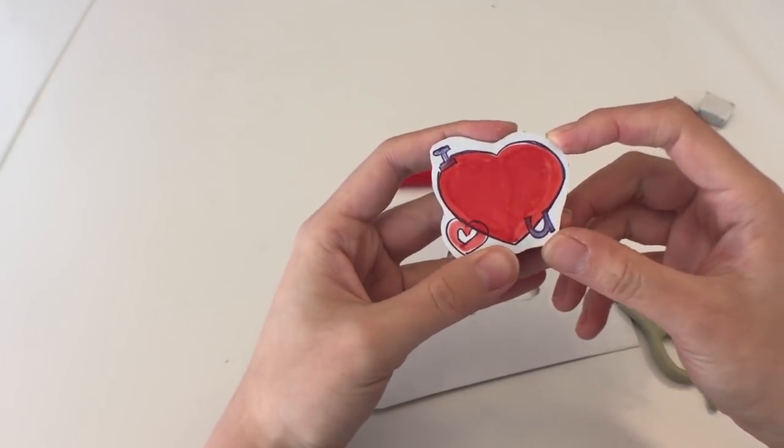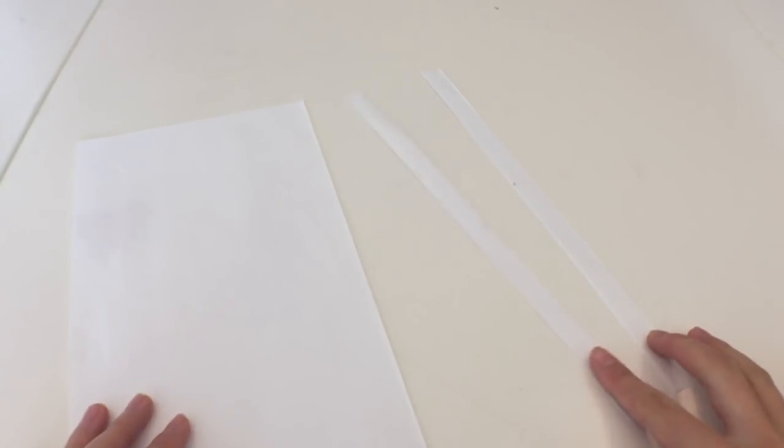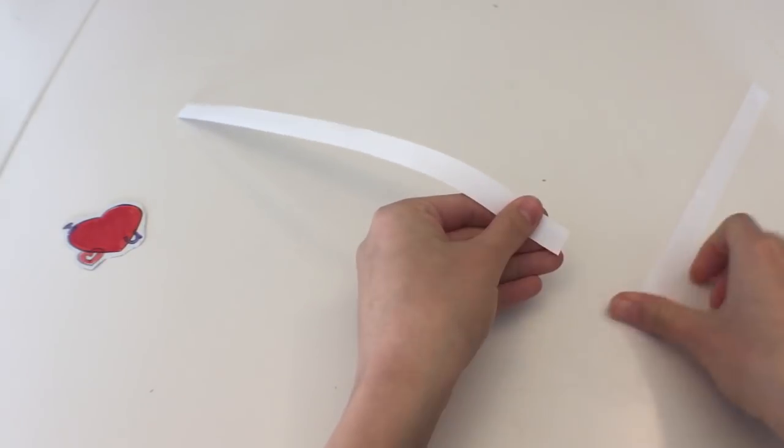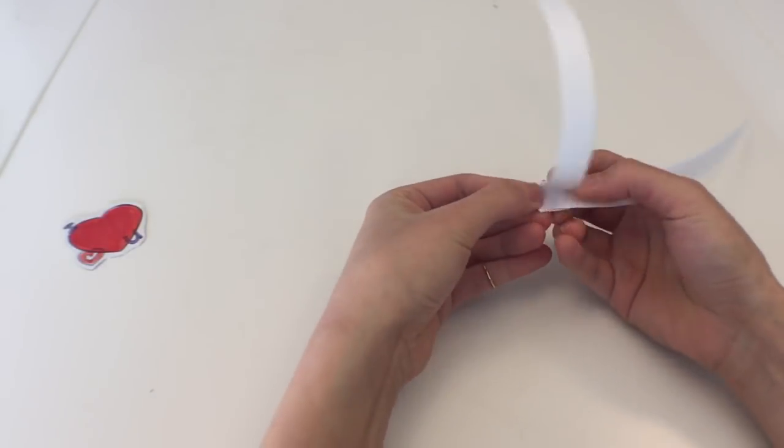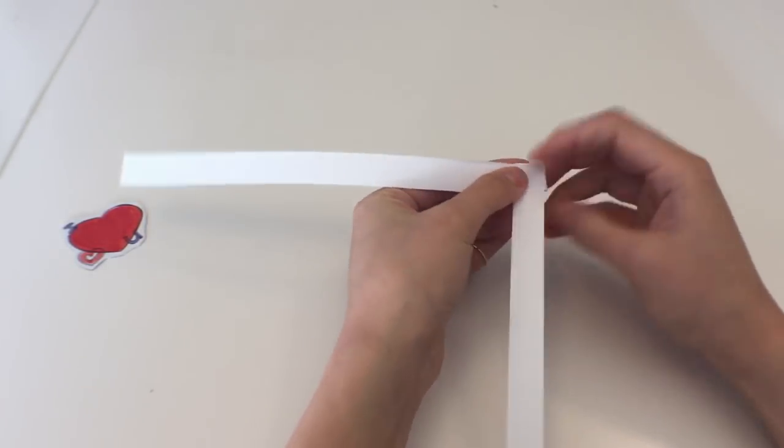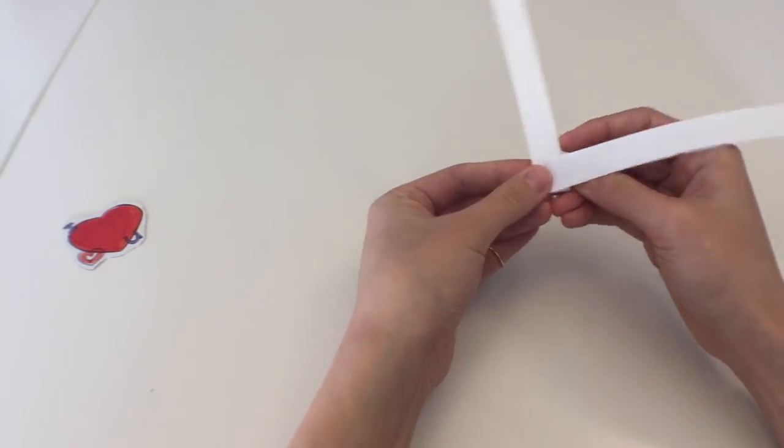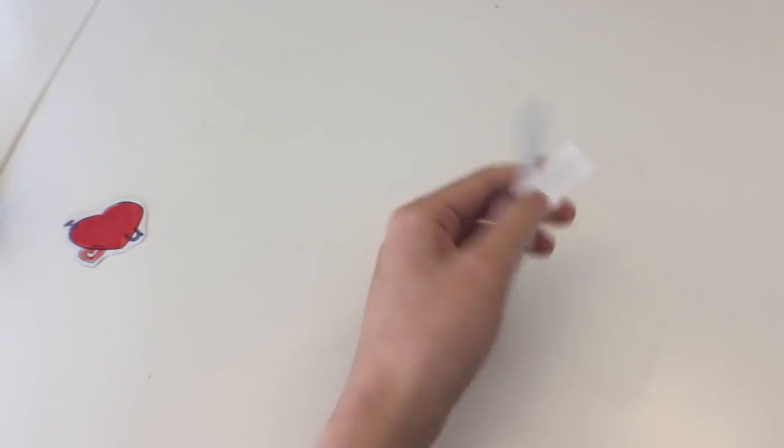Of course, we need to make the spring that makes the design pop out. Cut out two strips. And you just want to fold one sheet over the other repeatedly. Soon enough, you will see that a little bouncy spring will form. Just cut off any excess.